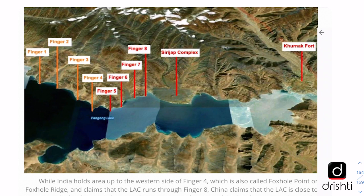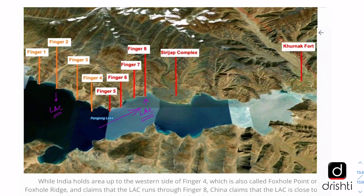At Pangong So Lake we see the 'fingers' — spurs jutting out from the mountain range numbered 1 through 8. India claims that finger 8 is where the LAC crosses, whereas China says finger 2 is where the LAC crosses. The area between finger 4 and finger 8 is the overlapping area. Indian patrols used to cover this distance up to finger 8, but Chinese forces have now moved in and stopped Indian patrols from reaching finger 8, trying to unilaterally change the status quo. Such confrontations had always been resolved before. Pangong Lake is also the highest saltwater lake in the world.